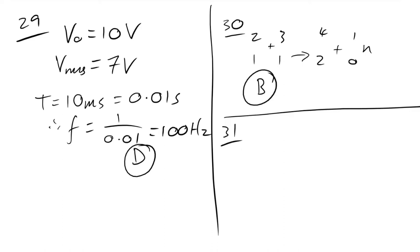Question 31: what do control rods do? They don't change the average kinetic energy of fission neutrons — so not B or D. They absorb fission neutrons, reducing their number. The average kinetic energy of the remaining fission neutrons is unchanged. The answer is C. Hope you found that helpful — please leave a like, and click on the card for other AQA papers.